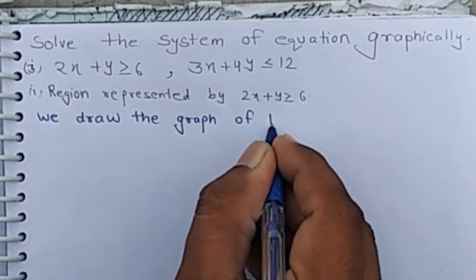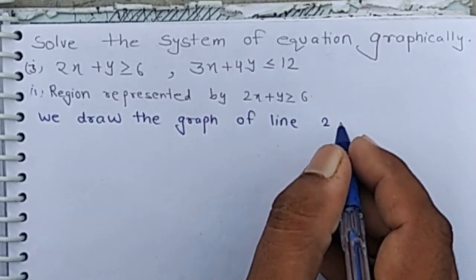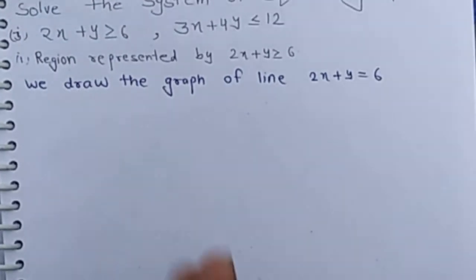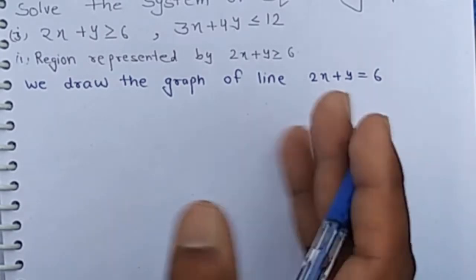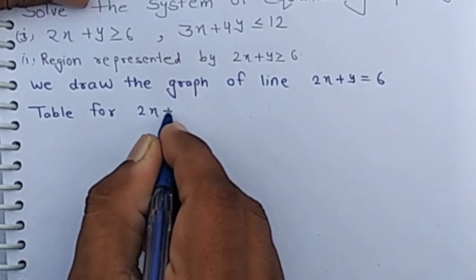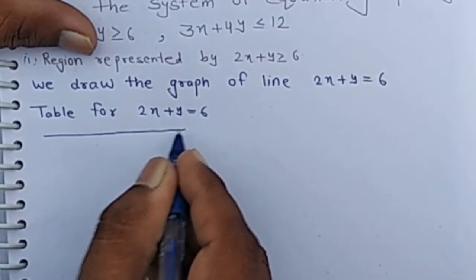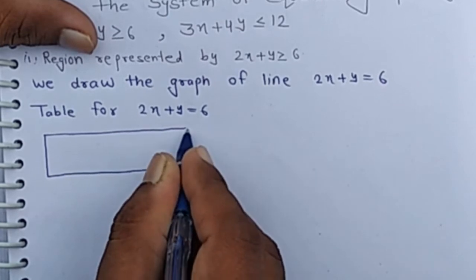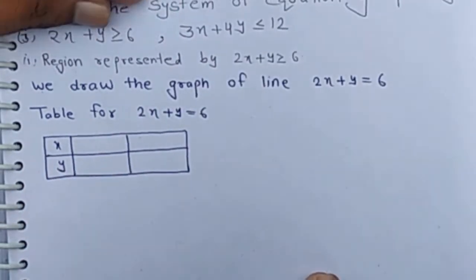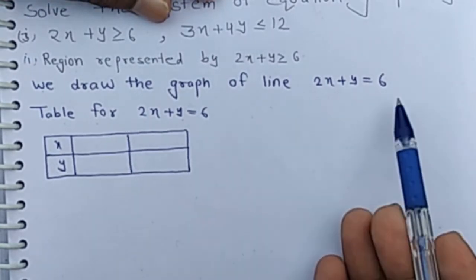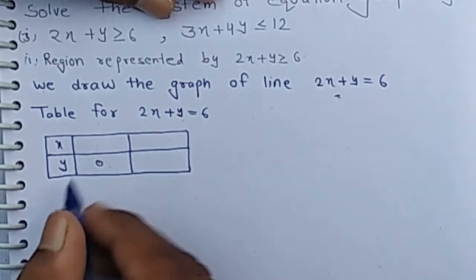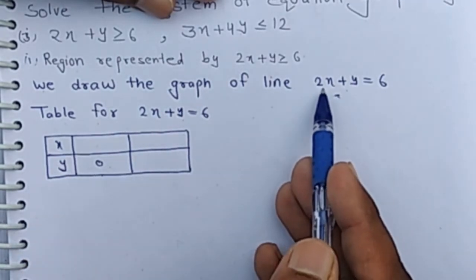We draw the graph of the line 2x plus y equals 6. First, we check at which points this line cuts the x-axis and y-axis. We make a table for 2x plus y equals 6. At the x-axis, y equals 0 — putting y equals 0, we get the value of x is 3.